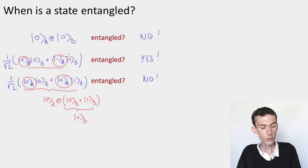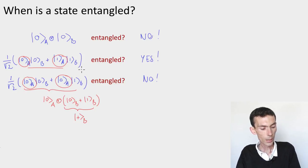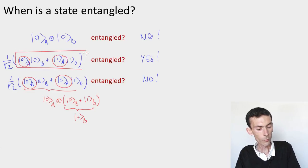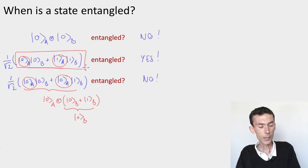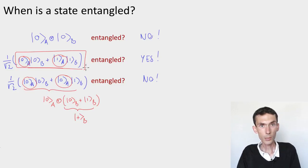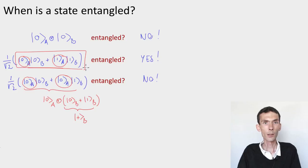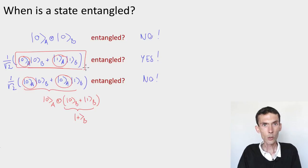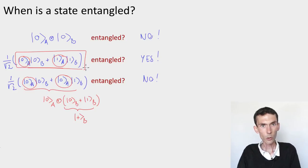It would be very convenient if all pure states were always given in a form where we have a basis for A and a basis for B. In this way, we'd immediately know there's no trick — the state cannot be factored, and if there's more than one term, it's an entangled state. That's exactly what the Schmidt decomposition is going to do for us.